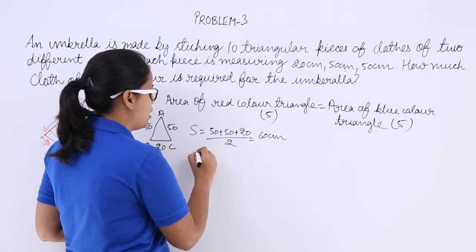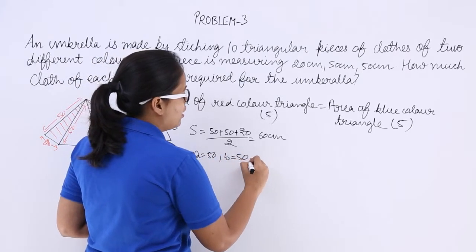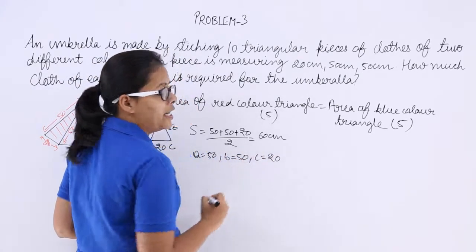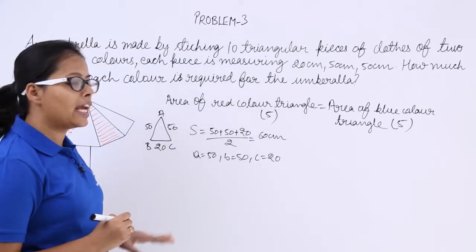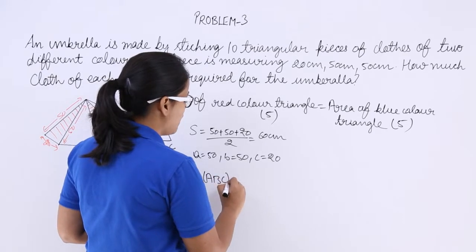And now let's suppose A equals 50, B equals 50, and C equals 20. So how will you calculate the area for this triangle? By using Heron's formula, as you know all of these factors.